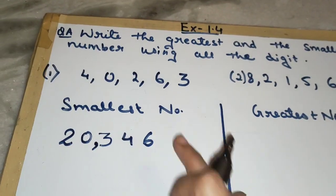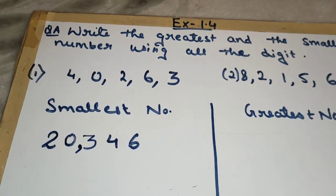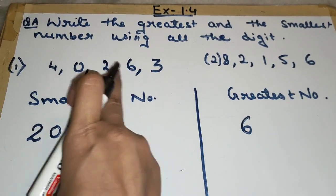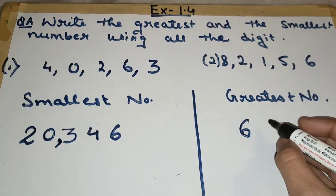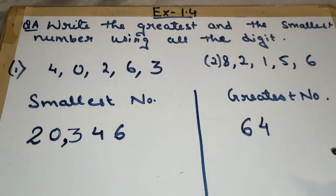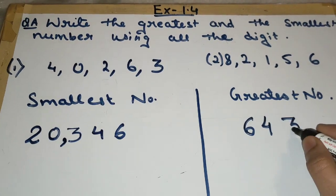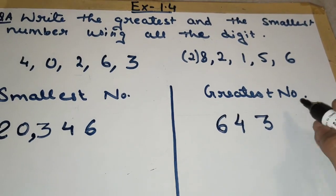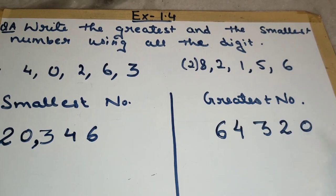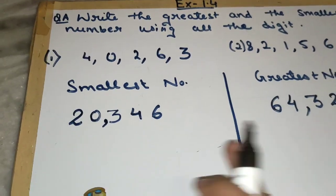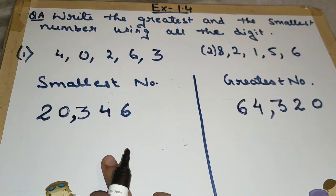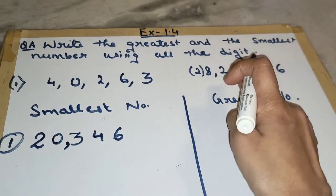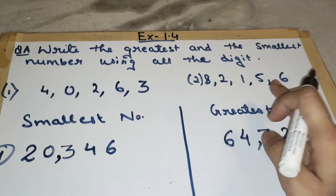Now we will make the greatest number. Which is the greatest digit? It is 6. So first we write 6, then 4, then 3, then 2, then 0. Put the comma. So we got the smallest number: twenty thousand three hundred forty-six, and the greatest number: sixty-four thousand three hundred twenty. That is the first question.